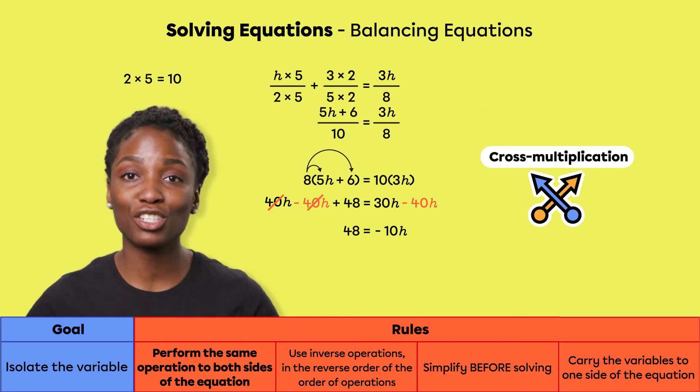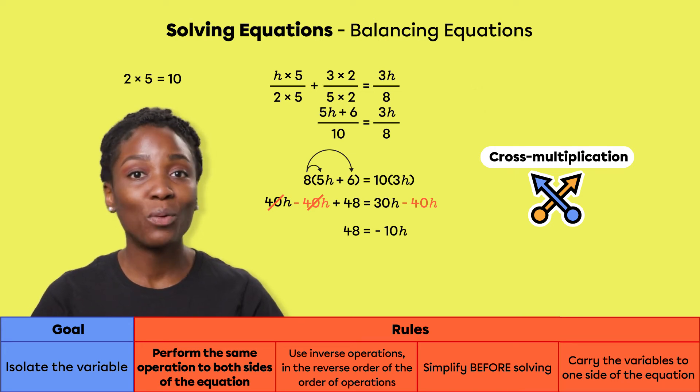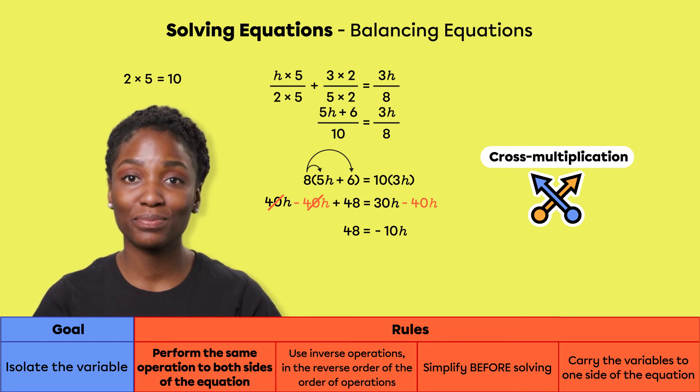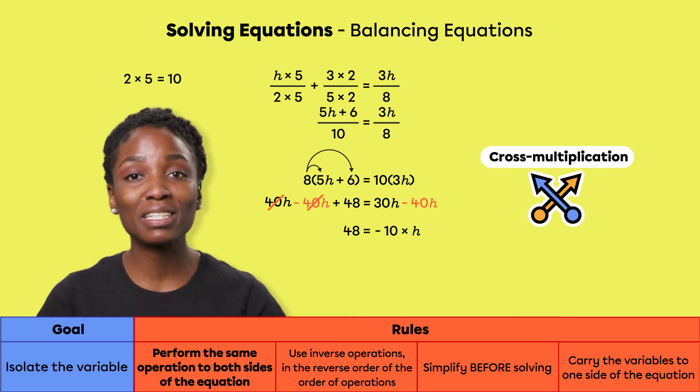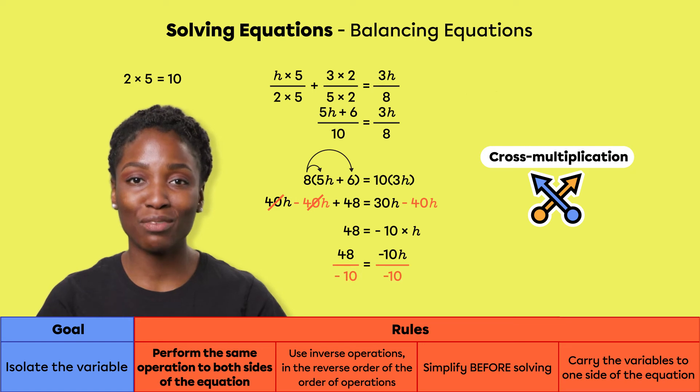Be careful, it's important to do the correct inverse operation to isolate the variable. When we see a minus sign, we have the tendency to add or to cancel it out. However, if we observe the situation carefully, the operation is not h minus 10, but rather negative 10h. There is a multiplication between the negative 10 and the h. What is the inverse operation of a multiplication? That would be a division. So we divide by negative 10 on both sides of the equal sign.